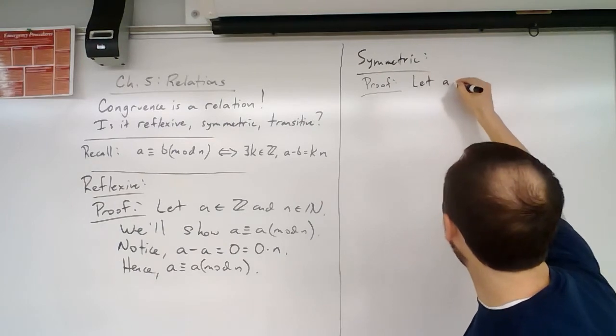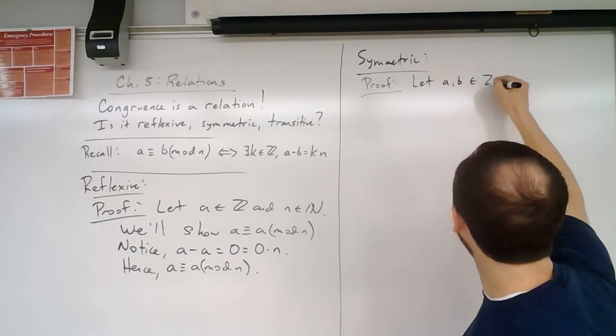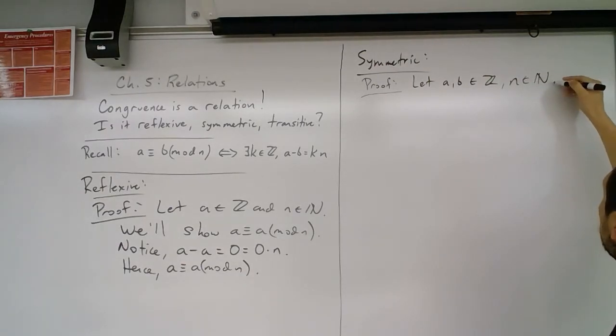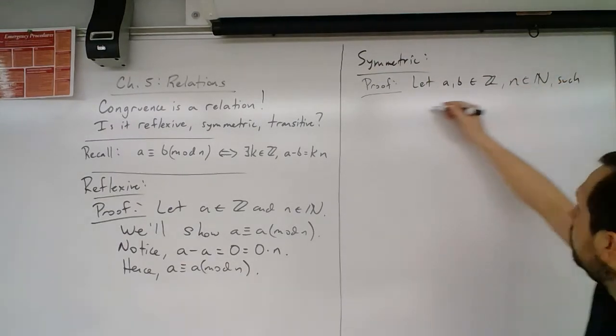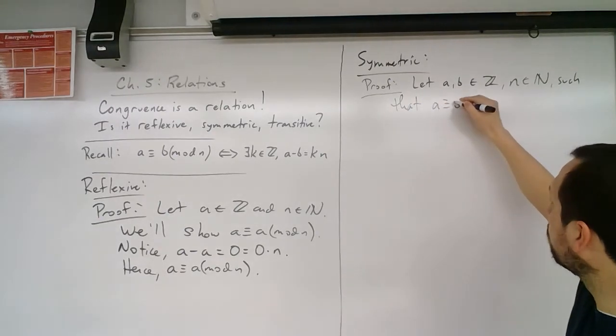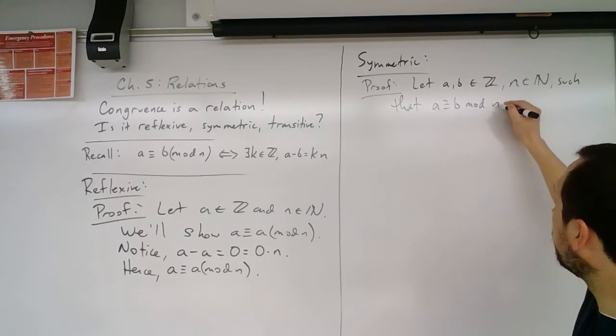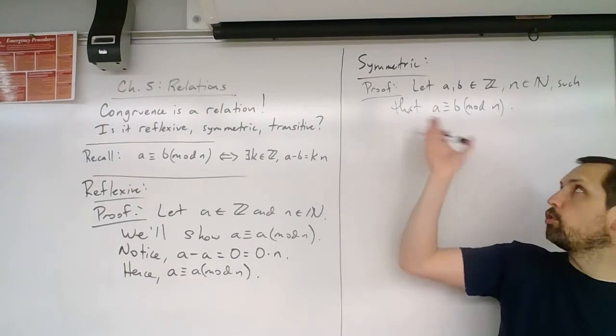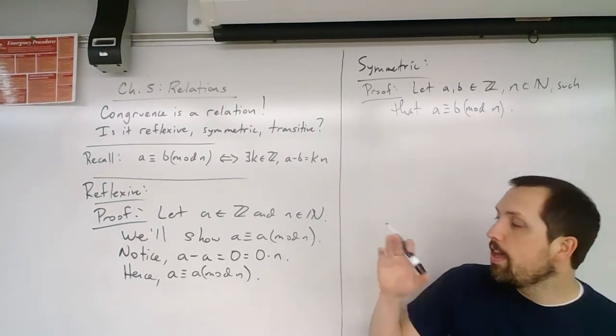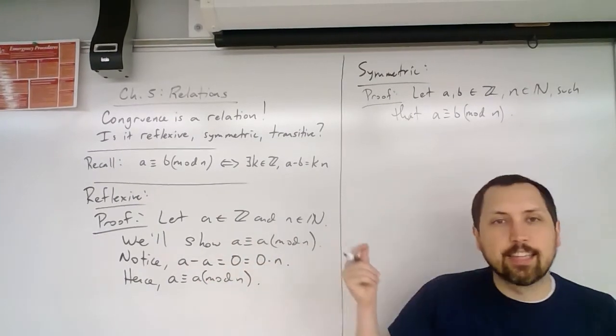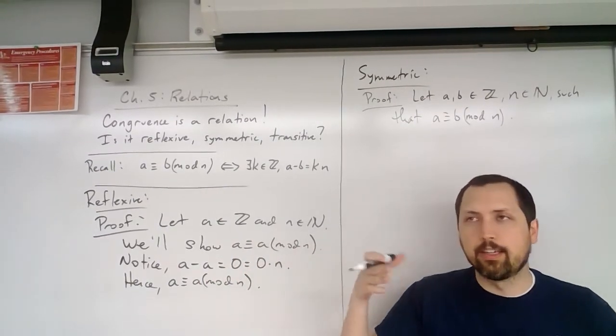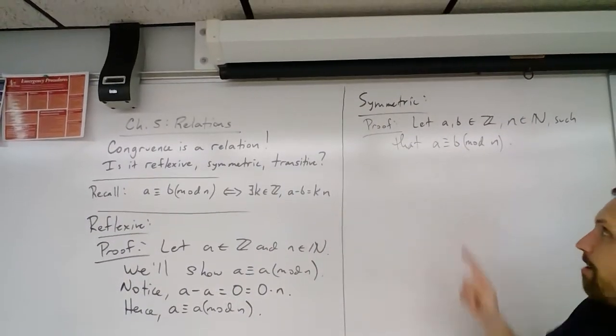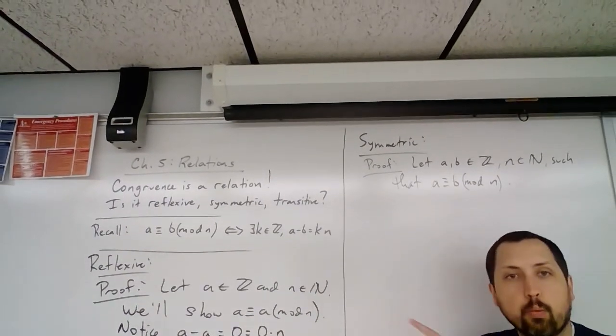So we're going to say, let a and b be integers, n be a natural number such that a is congruent to b mod n. So we're going to prove that this is true. Remember when we're trying to show that something's reflexive, we show that the relation with itself is true. Here we're going to show that if the relation holds for one direction.